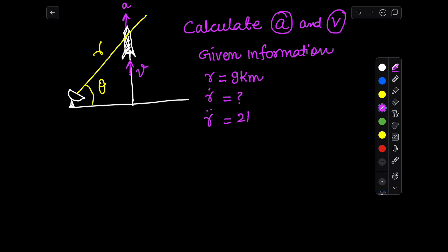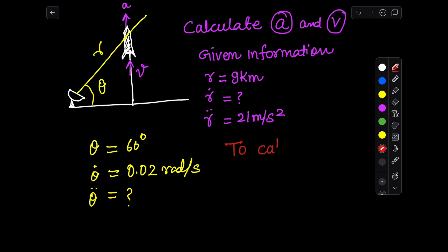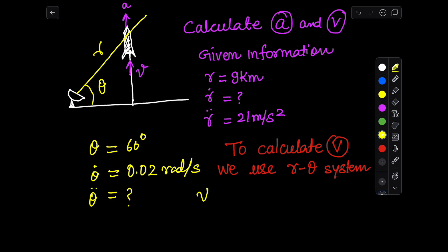The information given in this problem includes r, r-prime (r'), and r-double-prime (r''). Similarly, we have the values of theta and theta-prime (θ'). The double derivative of theta (θ'') is unknown. From the figure, we identify this as a problem in the r-theta coordinate system.